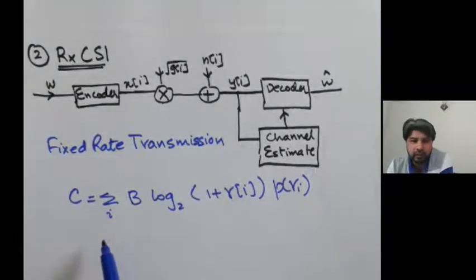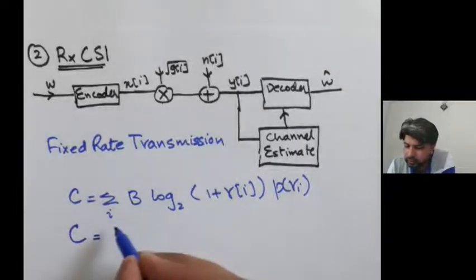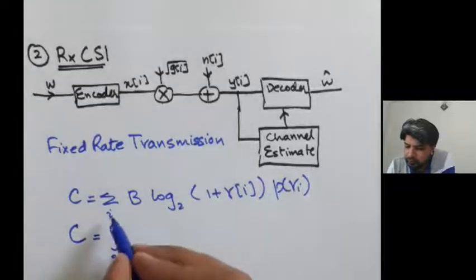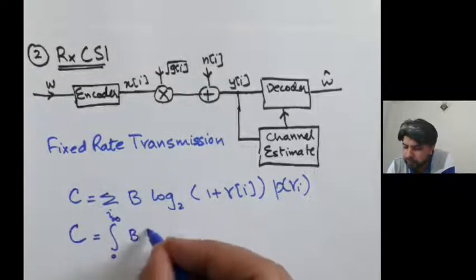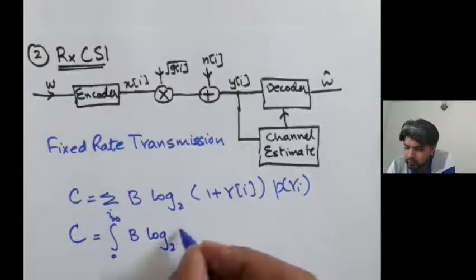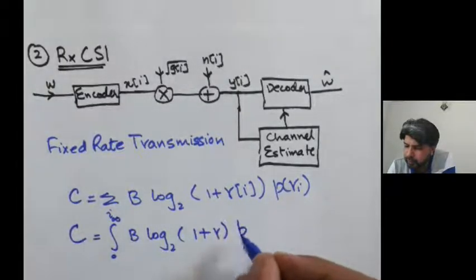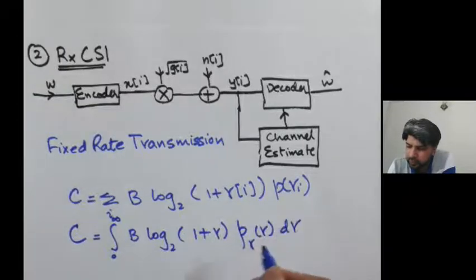This is nothing but the ergodic capacity discussed earlier. In continuous time, this capacity equals the integral from 0 to infinity of B log₂(1 + γ) · p(γ) dγ.